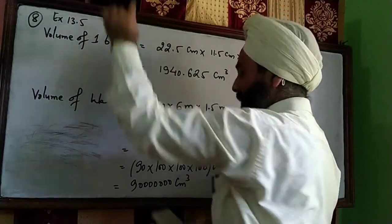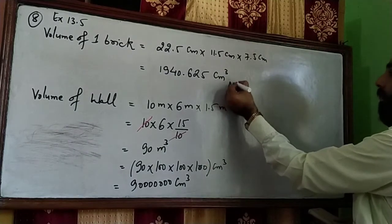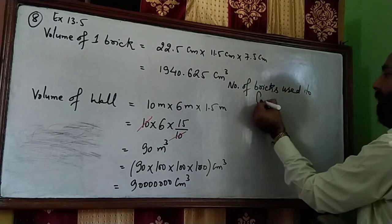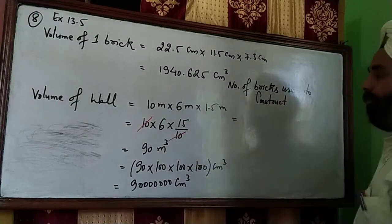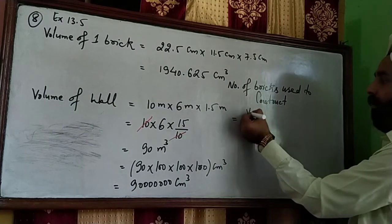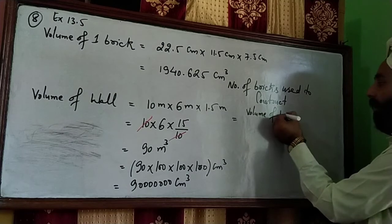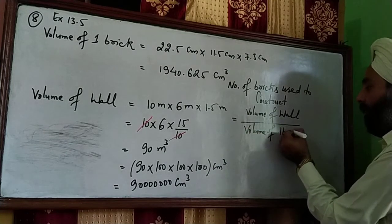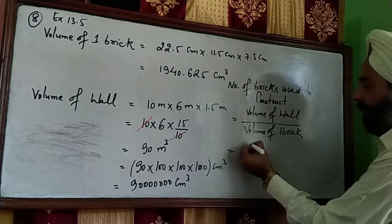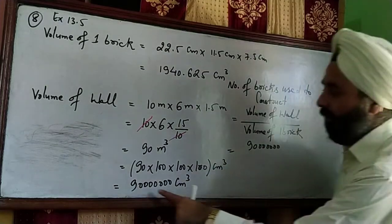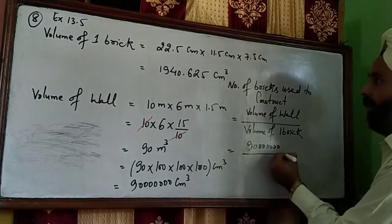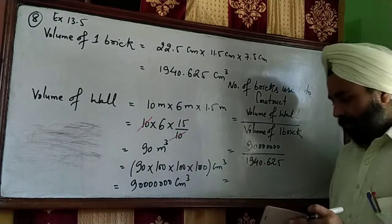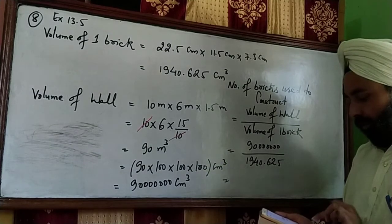Number of bricks to construct the wall equals volume of wall divided by volume of one brick. The volume of the wall is 90,000,000 cubic centimeters, and we divide by 1940.625 cubic centimeters.